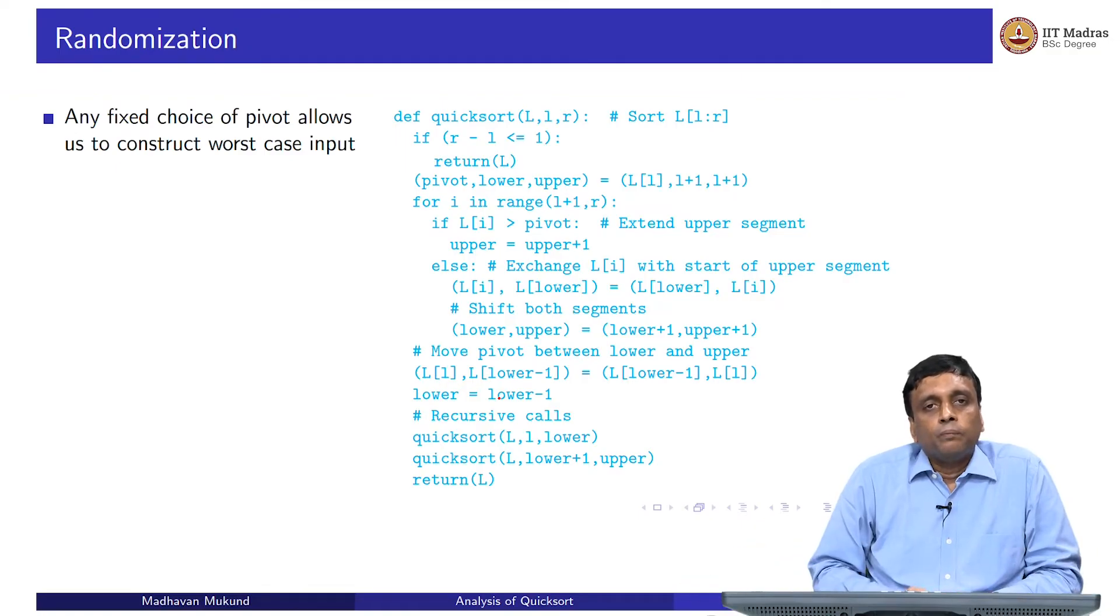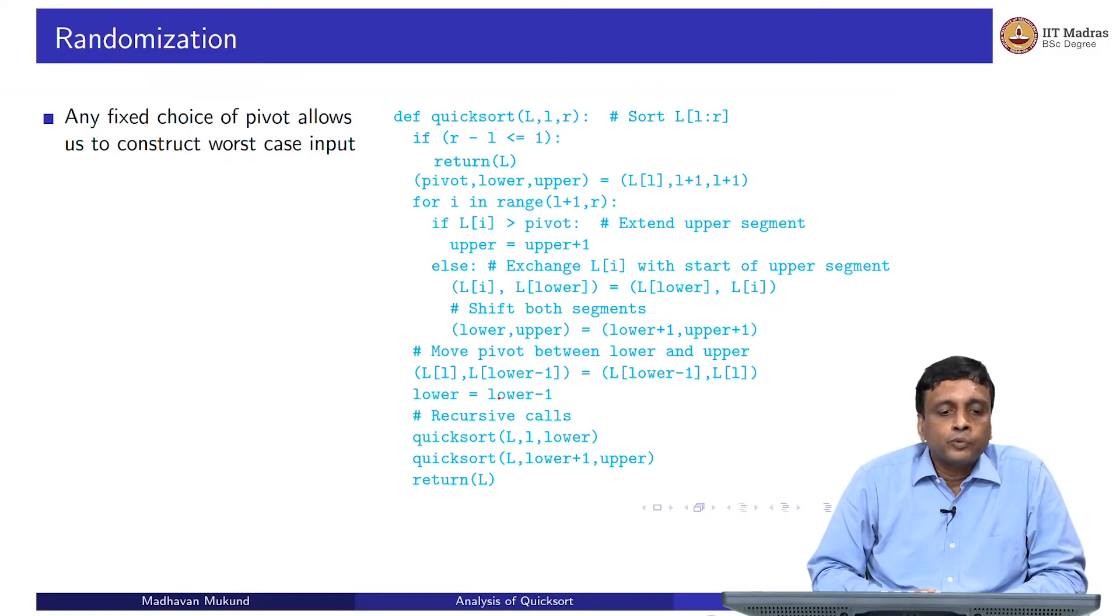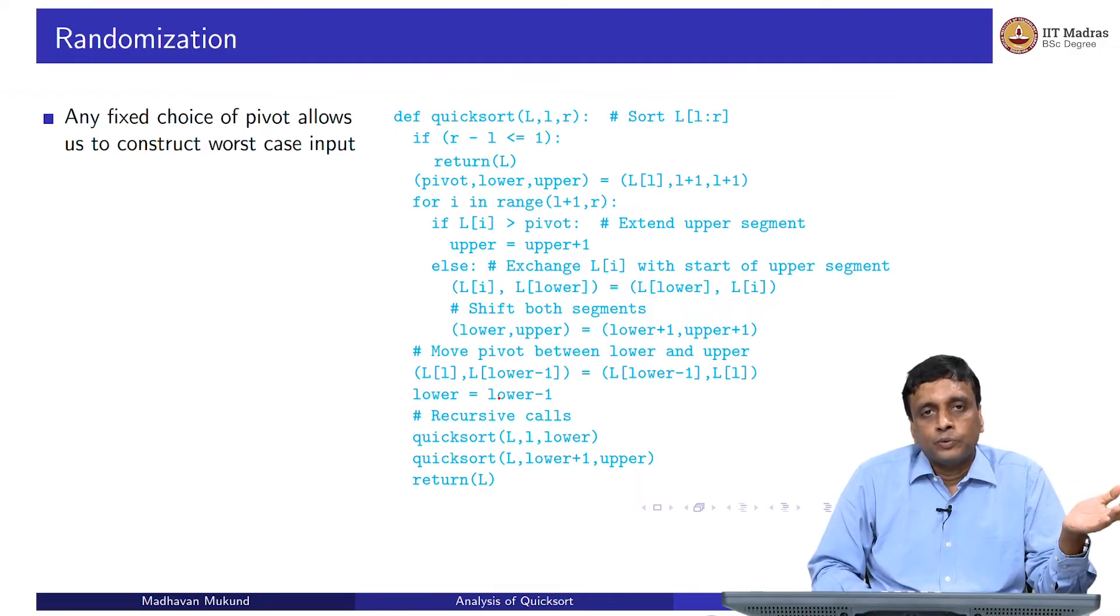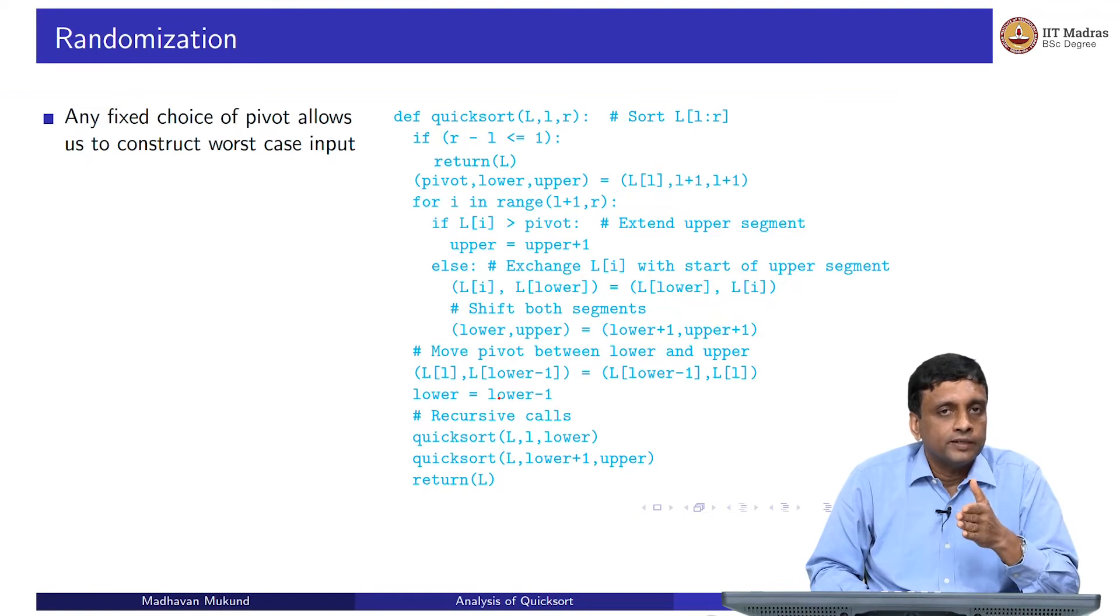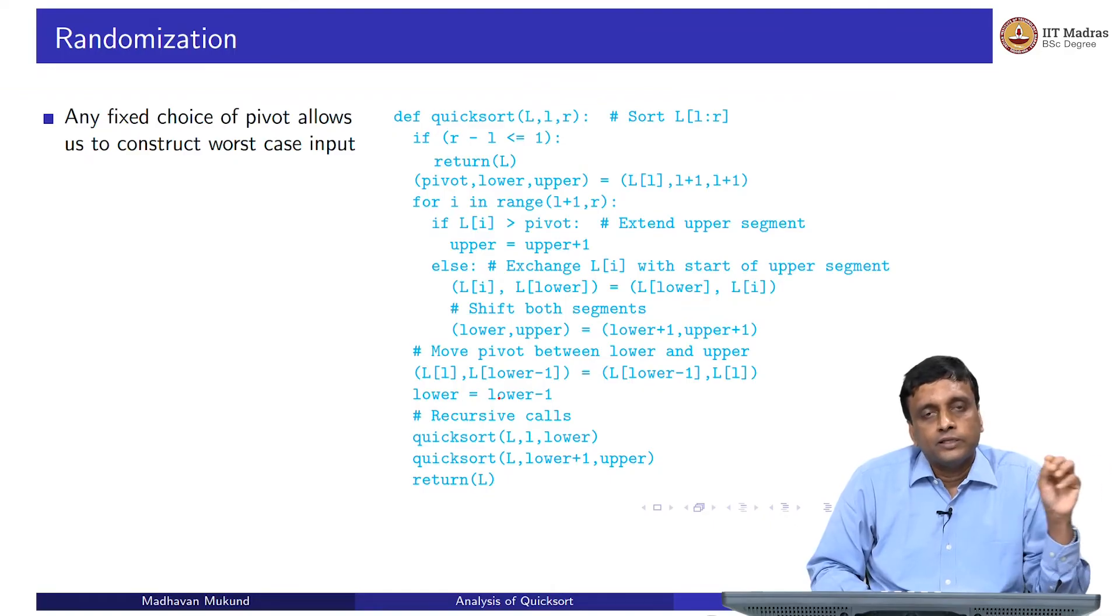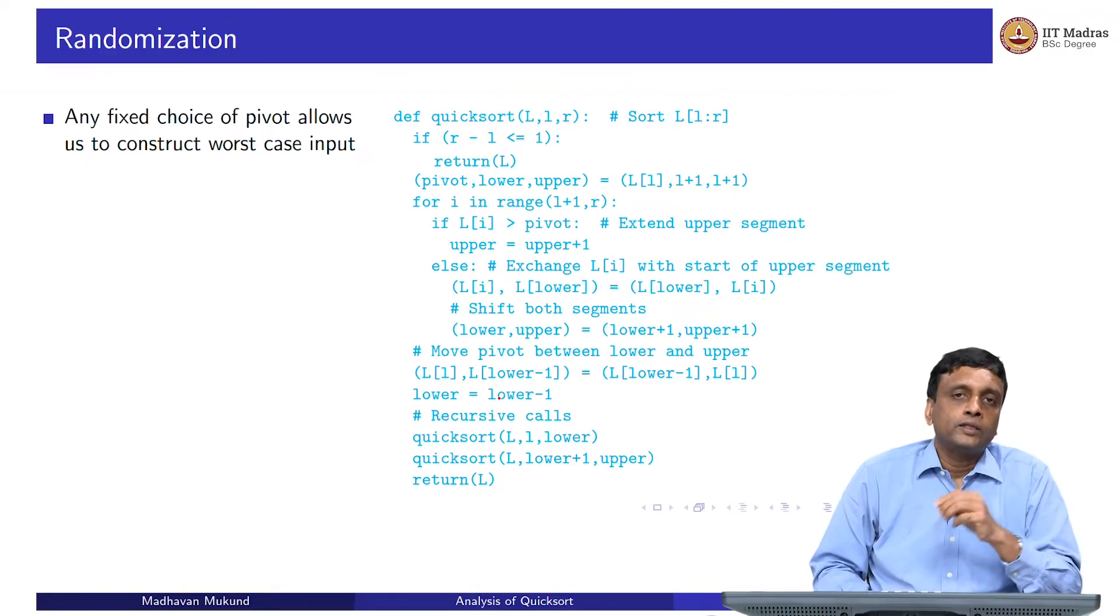There is another way to exploit this to beat the worst case. The real problem with quicksort is that choosing the pivot using a fixed position gives us a problem. If the first position is our pivot and we put the smallest value at the first position each time, we can build up an array which will always give worst case behavior. If you take the last position, I will give you a symmetric input which will be bad for that.